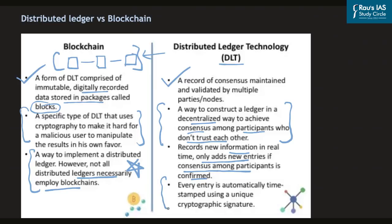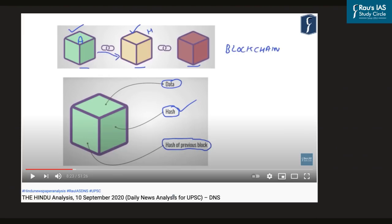In distributed ledger technology, every entry is automatically time-stamped using a unique cryptographic signature. Blockchain is simply a subset of digital ledger technology — the wider term for networks deploying consensus mechanisms, peer-to-peer review and secure information. The only major difference is in how blocks of information are arranged: in blockchain they are chained, while in DLT they can be arranged in any manner. For more on how blockchain works and its role in cryptocurrency, refer to the DNS of 10 September 2020.